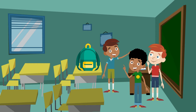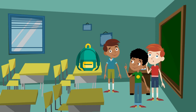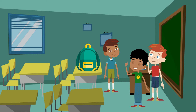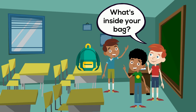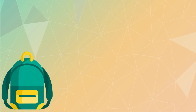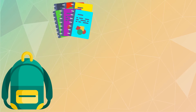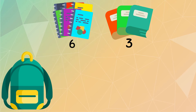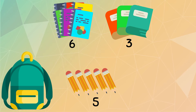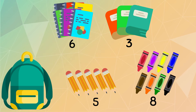At school, Paul's classmates noticed that his school bag is very heavy. So they ask him what's inside. Paul shows them that he has six notebooks, three textbooks, five pencils, and eight crayons. How many items does he have in his bag in total?